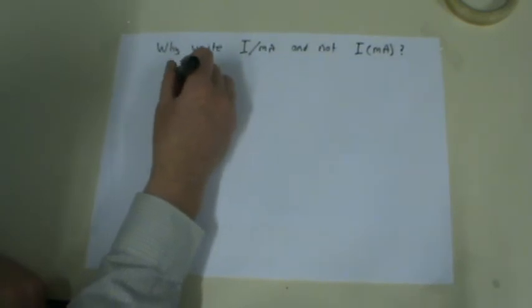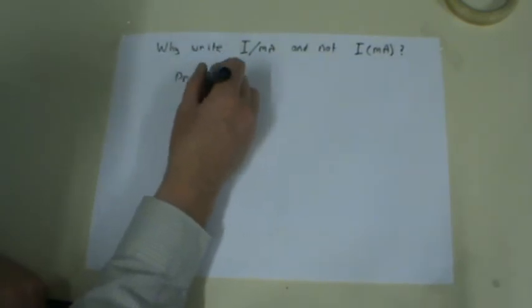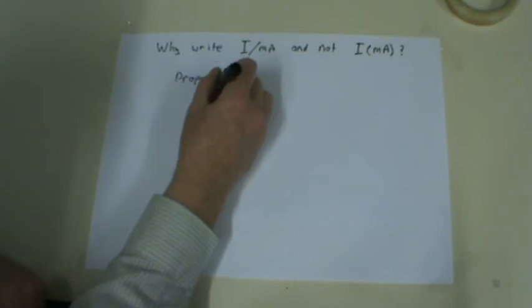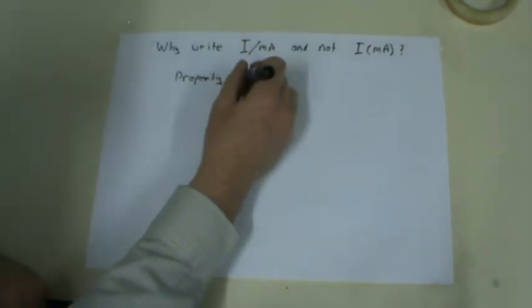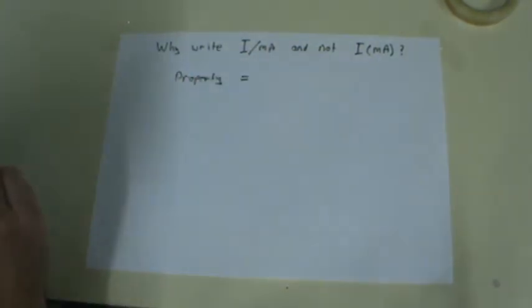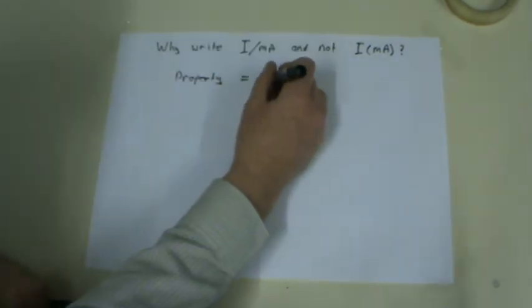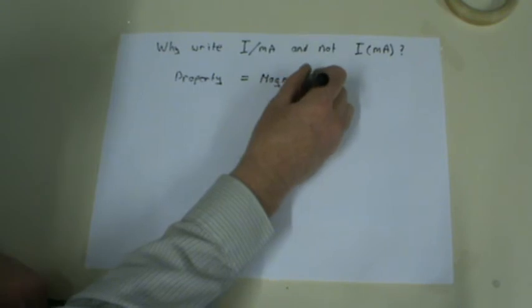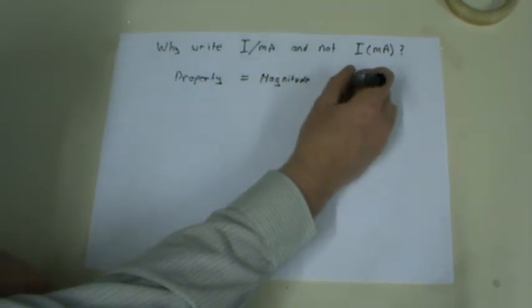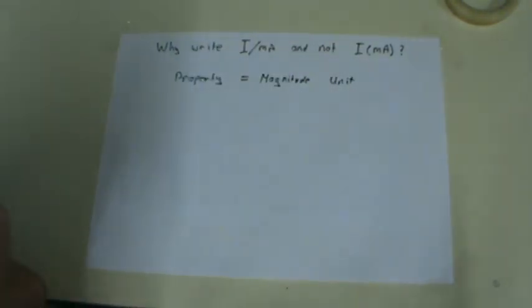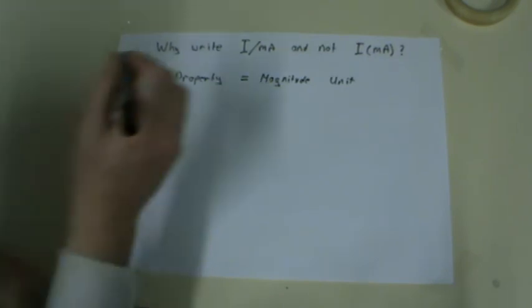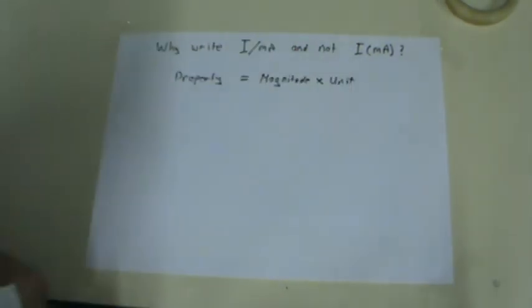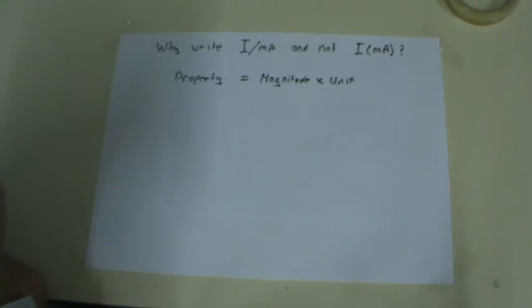If we're measuring the value of a property, for example the current, we can say that is made up of two parts. It's made up of a magnitude and it's also made up of a unit. I hope I've tried to emphasize to you that you can't just write down the number without putting the unit on as well.